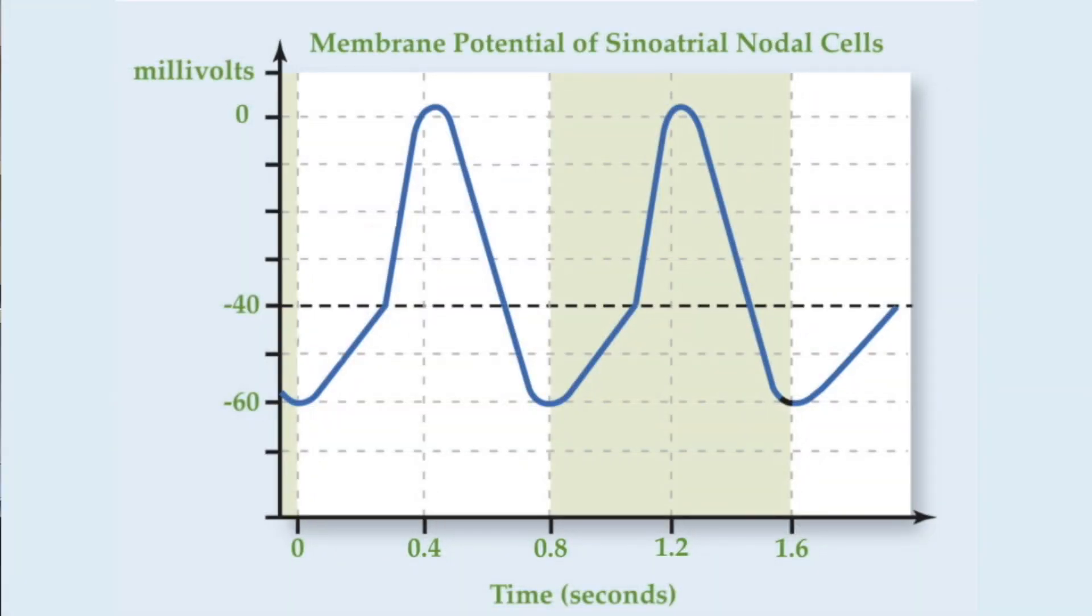Because of this, the nodal cell's membrane potential is slowly becoming less negative without an outside stimulus. Since the potential is approaching zero, meaning it's becoming less polarized, this is a slow depolarization of the membrane.